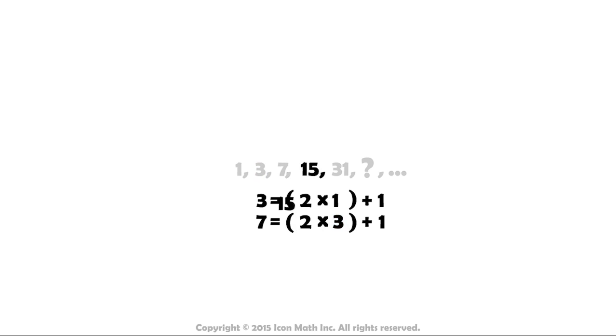Similarly, 15 is equal to 7 times 2 plus 1. And the same is true for 15 and 31. 15 times 2 is equal to 30 plus 1 is equal to 31.